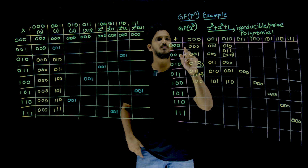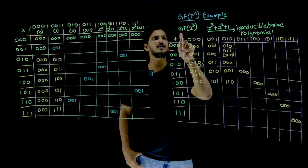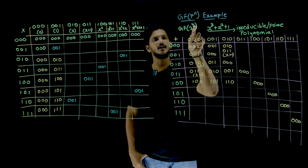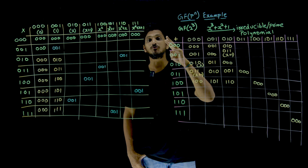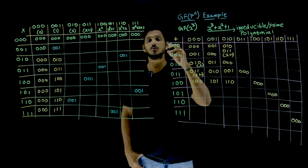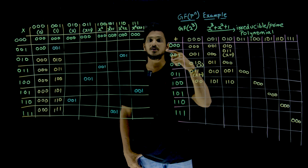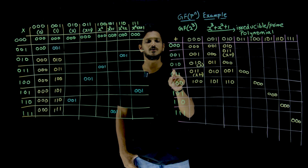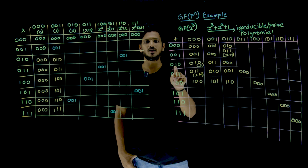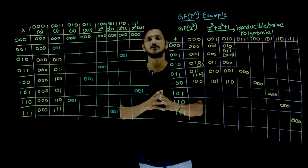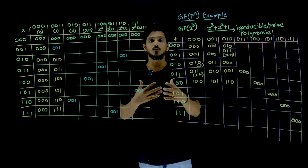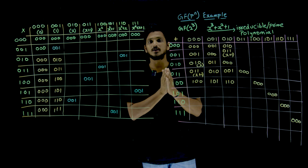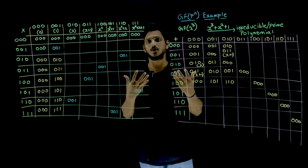So coming to this example, here we are taking GF of 2 cube. P is 2 and n is 3, meaning 3-bit words we have to consider. How many 3-bit words are possible? 000, 001, 010, 101, 011 — so total 8 possibilities are there. In order to see whether these operations form a field or not, we need to understand these operations.